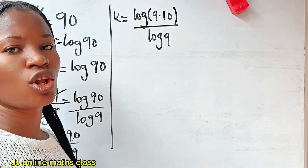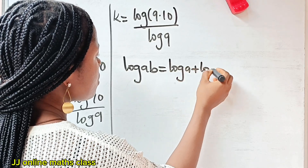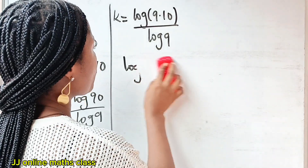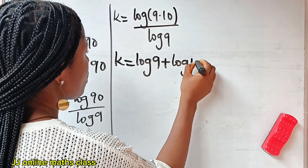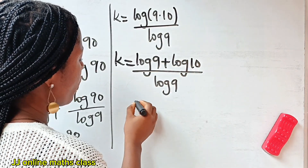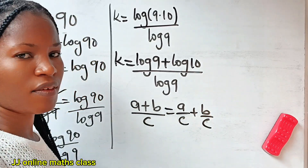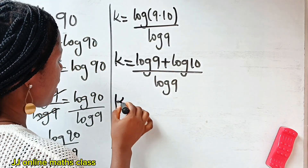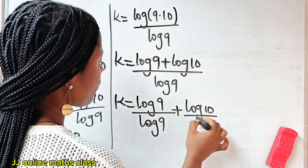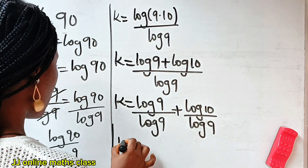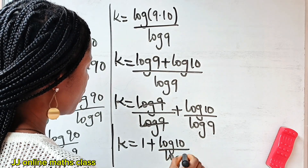Now, according to the law of logarithms, when you have log A multiplied by B, it is equal to log A plus log B. So we can write this as K is equal to log 9 plus log 10, all divided by log 9. When you have A plus B divided by C, this can be written as A over C plus B over C. So log 9 divided by log 9 cancels to give 1, leaving us with K is equal to 1 plus log 10 divided by log 9.